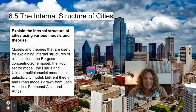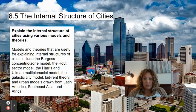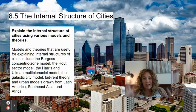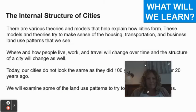6.5: Internal Structure of Cities. Models and theories useful for explaining internal structures include the Burgess Concentric Zone Model, Hoyt Sector Model, Harris, Ullman Multiple Nuclei, the Galactic City, bid-rent theory, and urban models from Latin America, Southeast Asia, and Africa. Model overload — brace yourselves, you'll be fine.